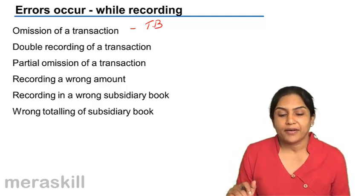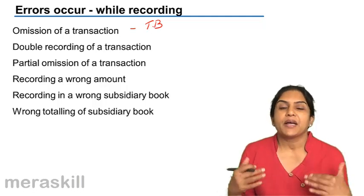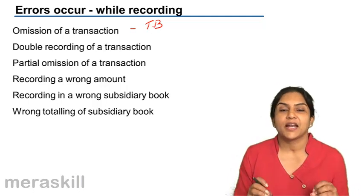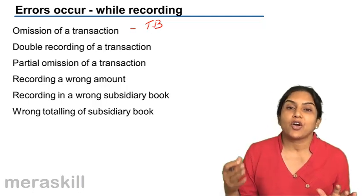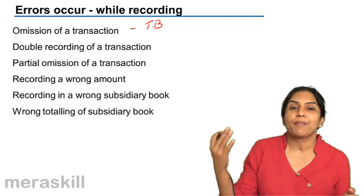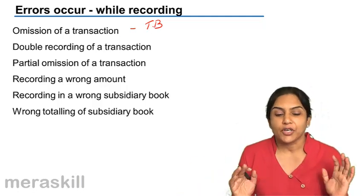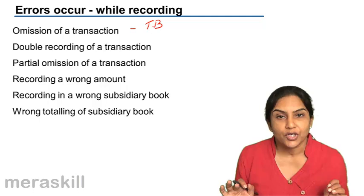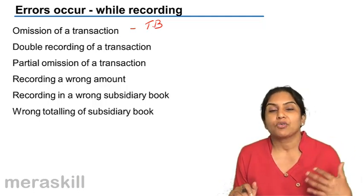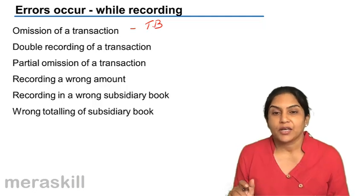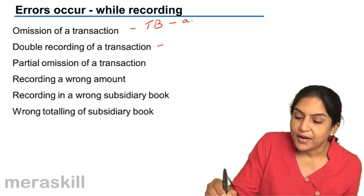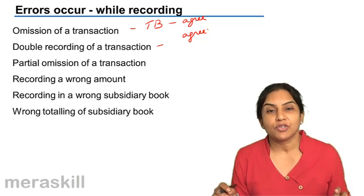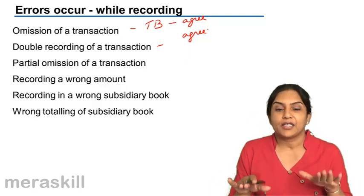It is also possible that one transaction is recorded twice. For example, a sale of 20,000 to Mr. Y is recorded twice — once with the original invoice and perhaps again with a copy of the invoice. In this case, the sales account is wrong by 20,000 more than it should be, and Y's account is also more by 20,000. Again, the trial balance will agree, though both accounts are wrong.